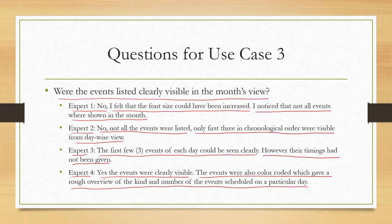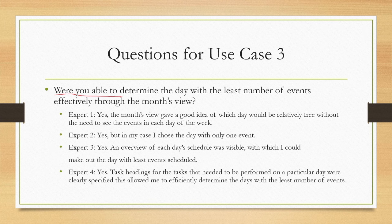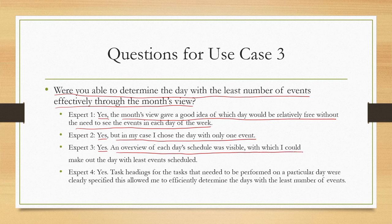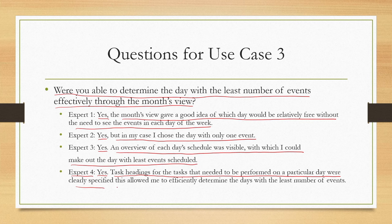Question: were you able to determine the day with the least number of events from the months view? All four experts agreed on yes. Expert 1 said the months view gave a good idea of which day would be relatively free. Expert 3 could make out the day with least events from the overview. Expert 4 said task headings were clearly specified, allowing efficient determination.